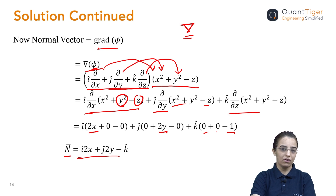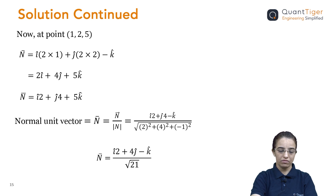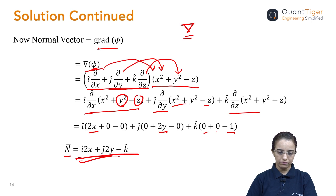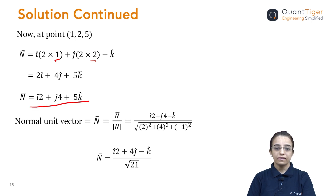After finding the gradient of the given scalar function, we got this normal vector which is perpendicular to the given surface, and it contains i, j, and k — so it is a vector quantity. Now in the question, we also need to find the unit vector at the point (1, 2, 5). So we need to plug in the values x=1, y=2 into this equation — z is not there in the expression. After substitution and simplification, this is the normal vector at point (1, 2, 5).